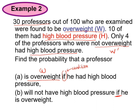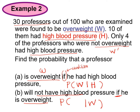For part A, we are looking for the probability of W given H. Which event happened first? He had high blood pressure, so H is the condition and W follows. For part B, the condition is overweight, and we want the probability of not having high blood pressure, which is H prime.